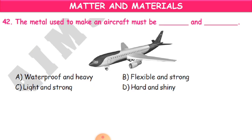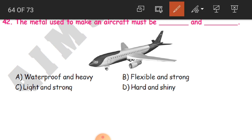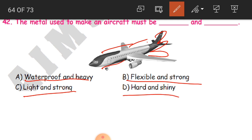Question 42: The metal used to make an aircraft must be what? The options are waterproof and heavy, flexible and strong, light and strong, or hard and shiny. The answer is light and strong. It must be light in weight because it has to fly — too much weight means it cannot fly easily. And it must be strong because it has to carry passengers and deal with all weather conditions in the sky. So C — light and strong — is the answer.